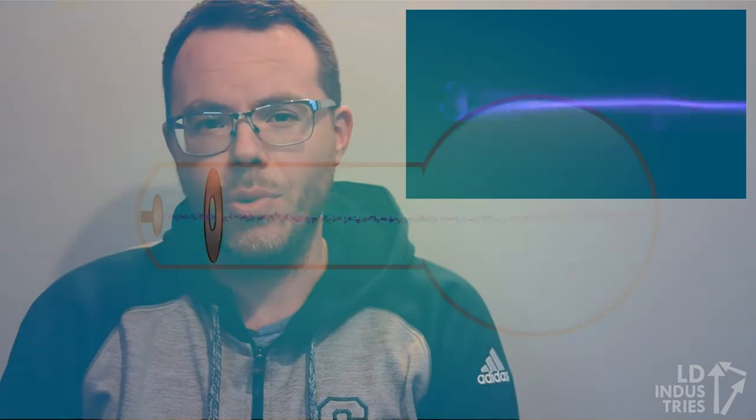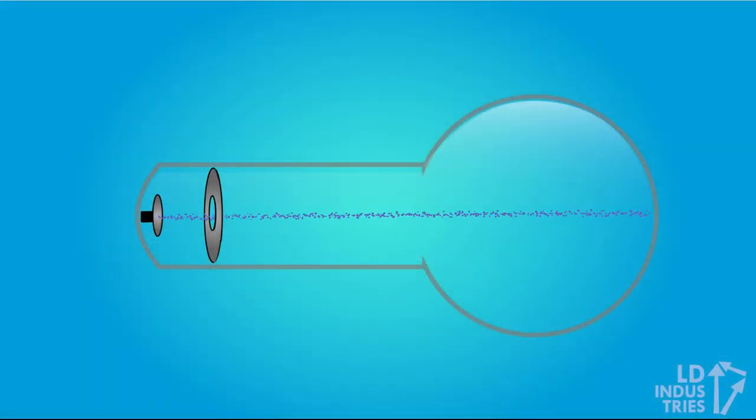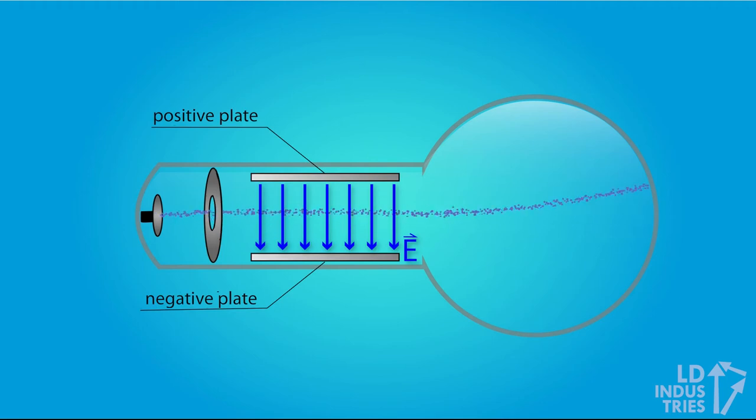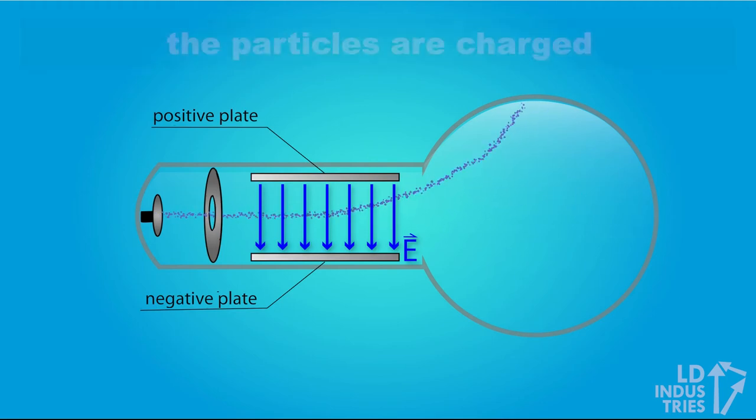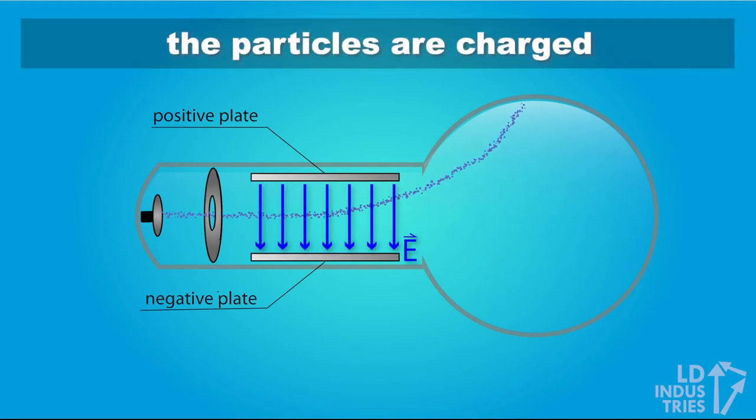So what is this ray made out of? Well, it's made out of cathode ray particles, but what are cathode ray particles and how do we know anything about this ray at all? There are a couple of observations we can start to make about cathode rays. The first one is that the ray can be deflected by electric fields. This observation tells us that the ray has a charge since it experiences the electric force.